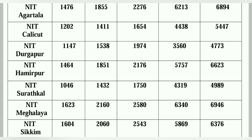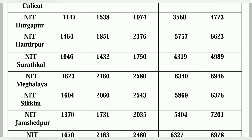NIT Meghalaya: General is 1623, EWS is 2160, OBC is 2580, SC is 6340, ST is 6946. NIT Sikkim: General is 1600, EWS is 2060, OBC is 2543, SC is 5869, ST is 6376.